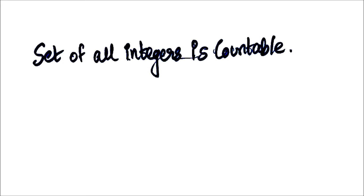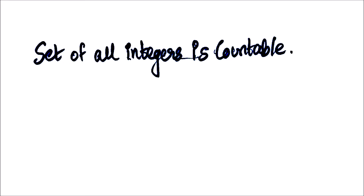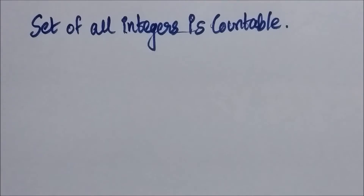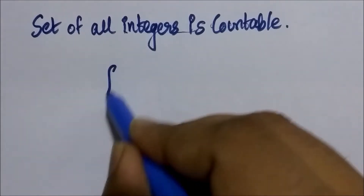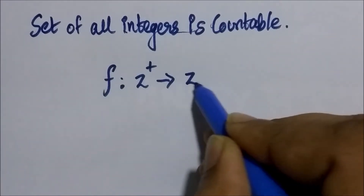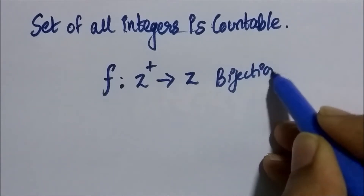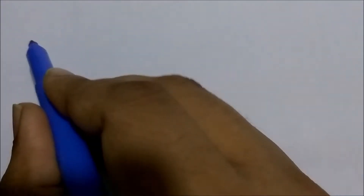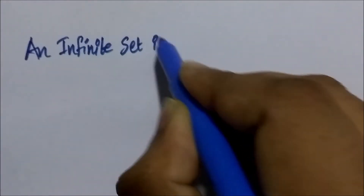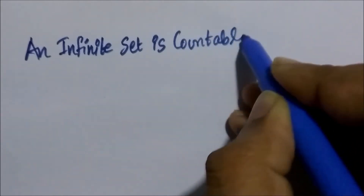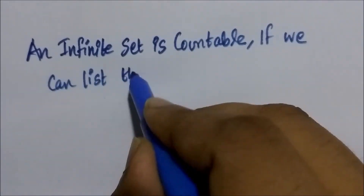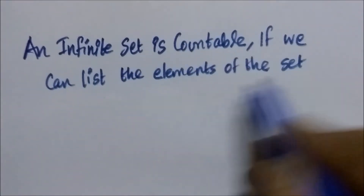We know that the set of all integers is an infinite set. And we know that to prove an infinite set is countable, we have to show that that set has the same cardinality as the set of positive integers. In other words, we need to show a bijection between the set of positive integers and the set of integers. But we also learned that an infinite set is countable if we can list all the elements of that set in a sequence.